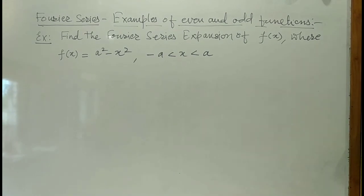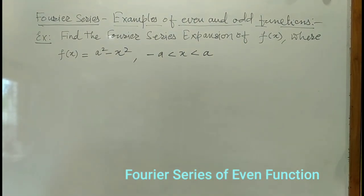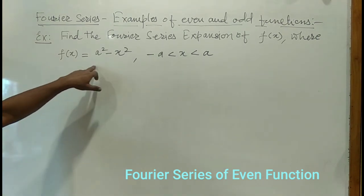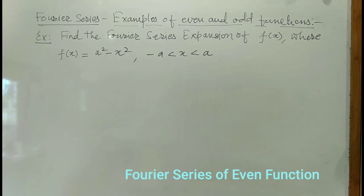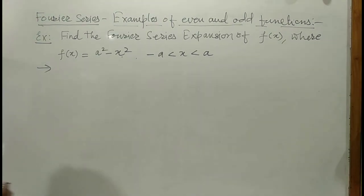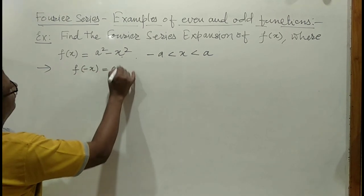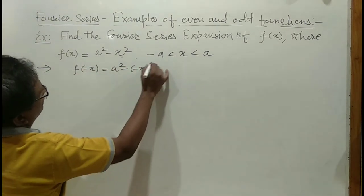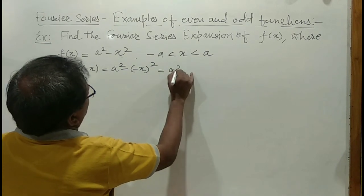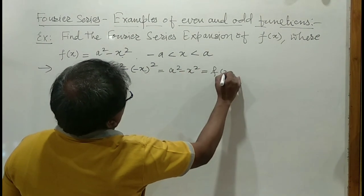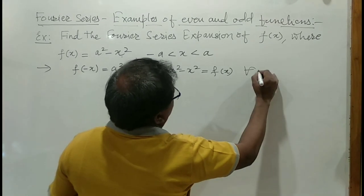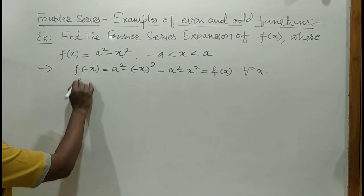Let us see another example. Find the Fourier series expansion of the function f(x), where f(x) equals a squared minus x squared for minus a less than x less than a. First of all we check whether the function is even or odd. f(minus x) equals a squared minus (minus x) squared, which equals a squared minus x squared, which equals f(x). This is true for all x, therefore f is an even function.